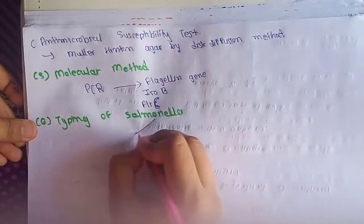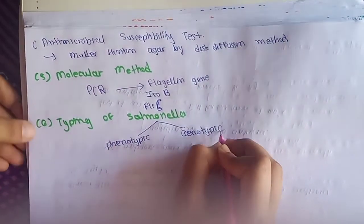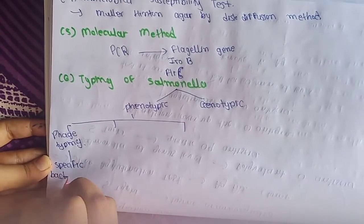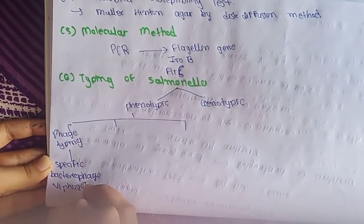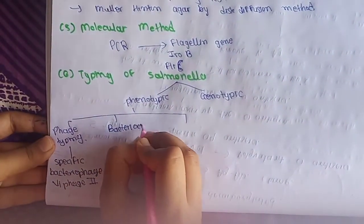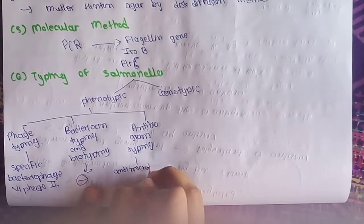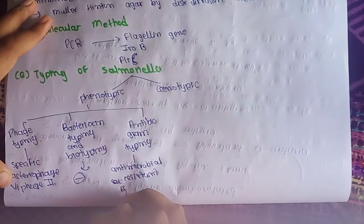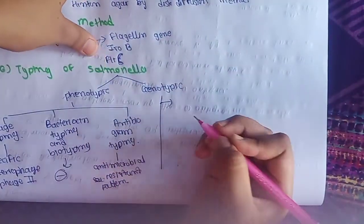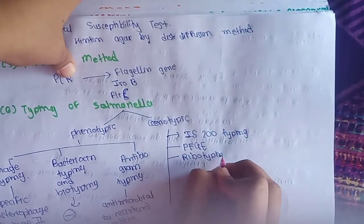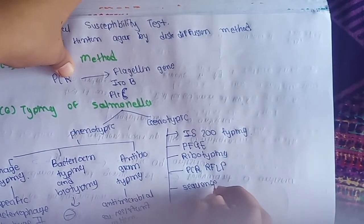The last method is typing of Salmonella, which includes phenotypic and genotypic methods. Phenotypic methods include phage typing — Vi phage 2 is used — bacteriocine typing, and biotyping, though the latter two are now obsolete. Antibiogram typing is based on antimicrobial resistance patterns. Genotypic typing includes IS200 (insertion sequence 200) typing — the most useful — PFGE (pulsed-field gel electrophoresis), ribotyping, PCR-RFLP, and sequence-based typing, which is the most widely used.